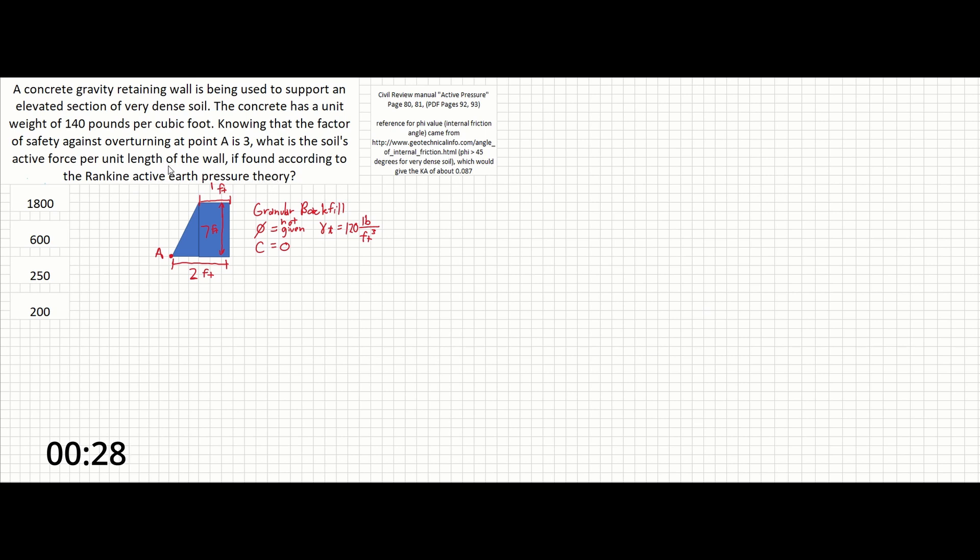So the first thing we can do in this problem is go to pages 80 or 81 of our civil review manual. That's going to give us some equations that we're going to want. The first one is going to be the equation for coefficient of active earth pressure, and that's going to be KA equals tan squared 45 minus phi over 2.